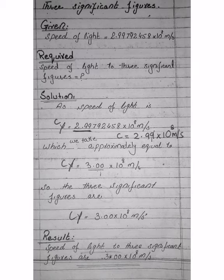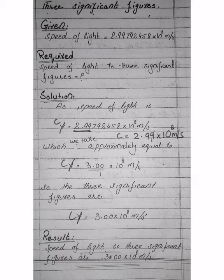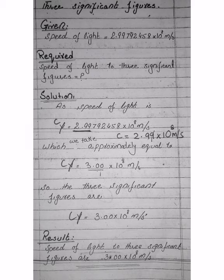All three numericals are now complete. In these three numericals, you can see that the topics of prefixes, scientific notation, and significant figures are all covered. Kindly read the topics well, memorize them, and practice them so that the topics become clear and the numericals will be clear too. Remaining numericals of this chapter we will discuss in the next video. Thank you, stay home, stay safe, Allah Hafiz.